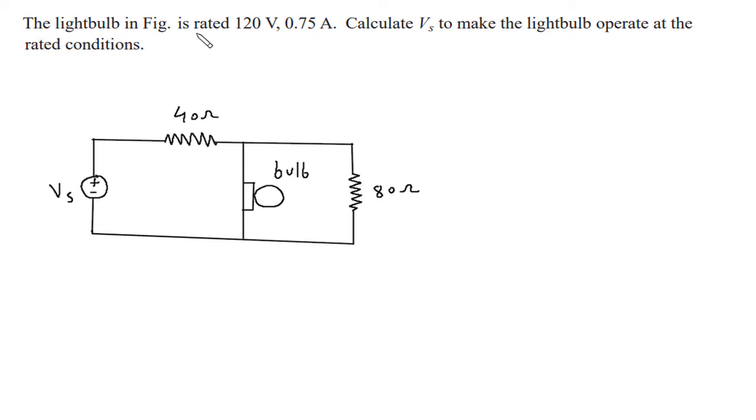The light bulb in the figure is rated 120 volt, 0.75 ampere. Calculate Vs to make the light bulb operate at the rated conditions. So we have to find this Vs.